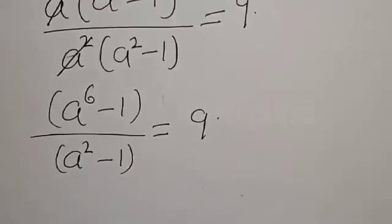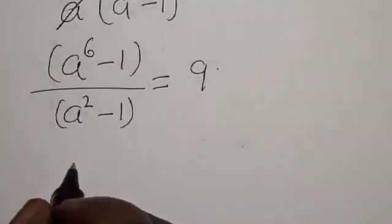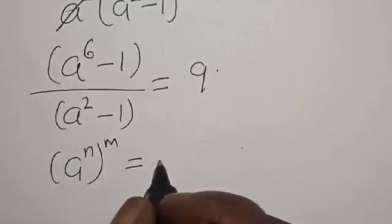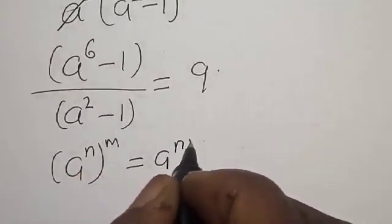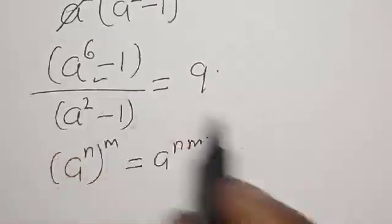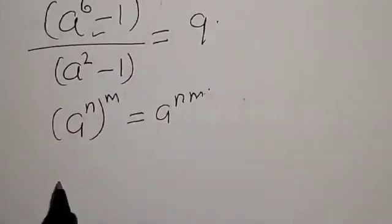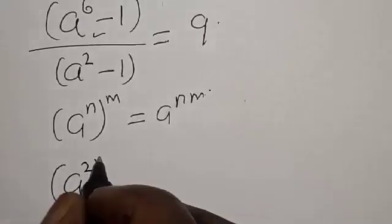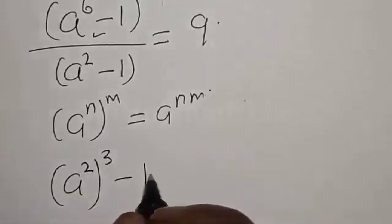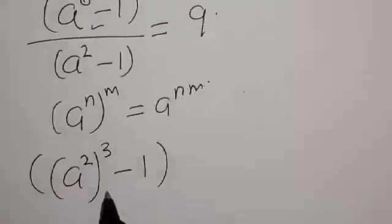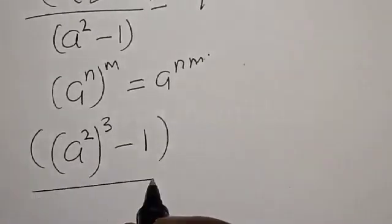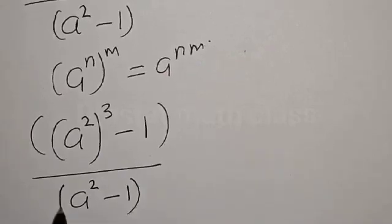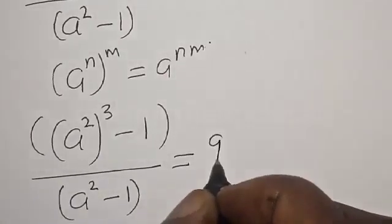Now remember: a raised to power n, raised to power m, is the same thing as a raised to power nm. Then let's express this — we have a squared raised to power 3, minus 1, divided by a squared minus 1, is equal to 9.